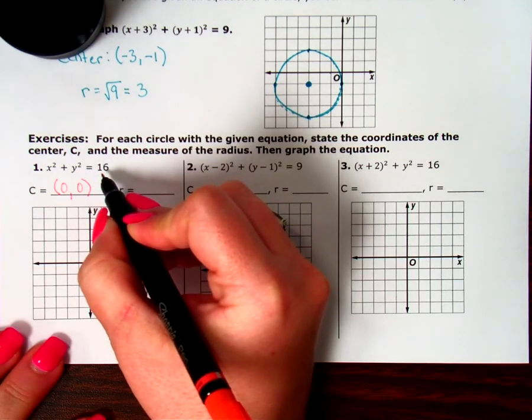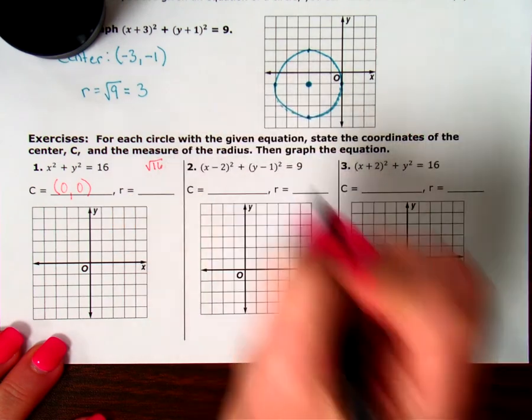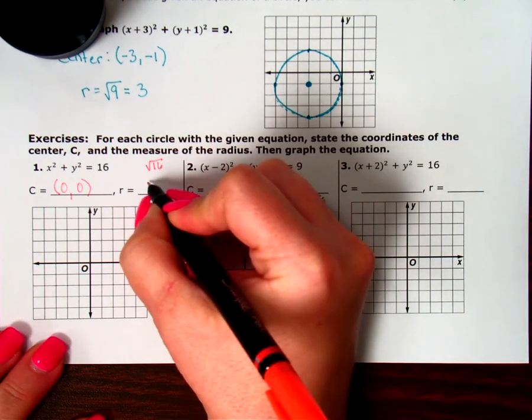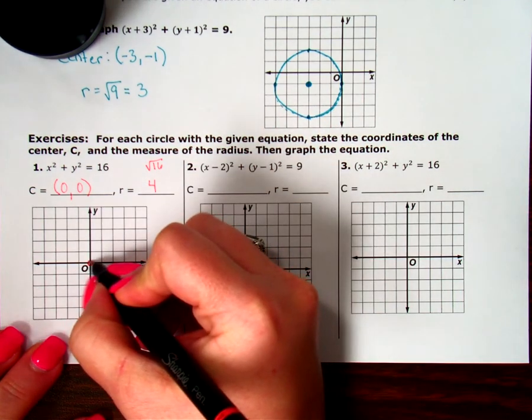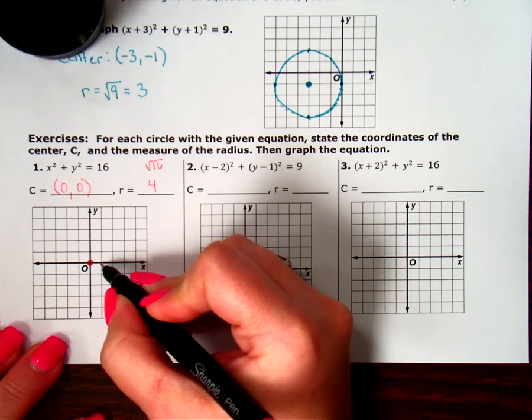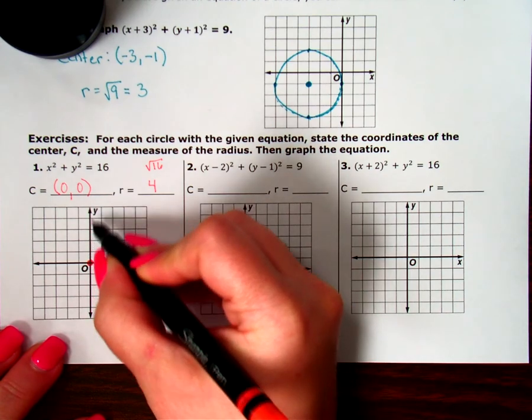And then my radius, what did I square to get 16? The opposite of squaring is square rooting. So my radius must be 4. My center is at 0, 0. And then I'm going to go in all four directions. 1, 2, 3, 4. 1, 2, 3, 4. 1, 2, 3, 4. And 1, 2, 3, 4.